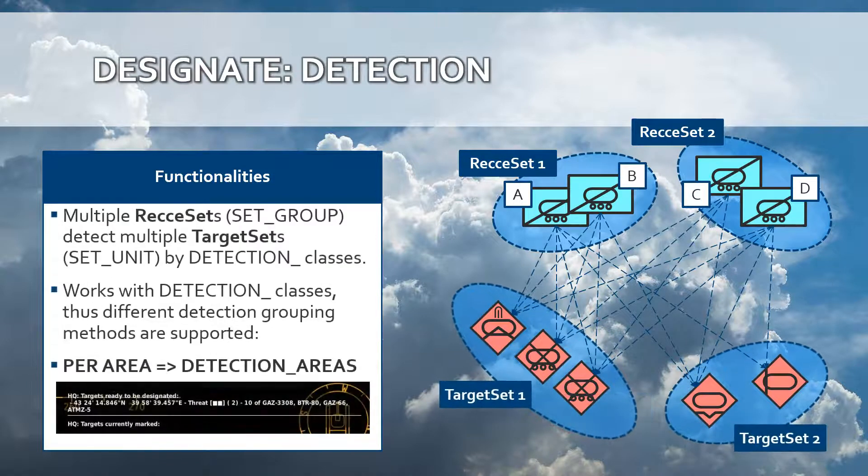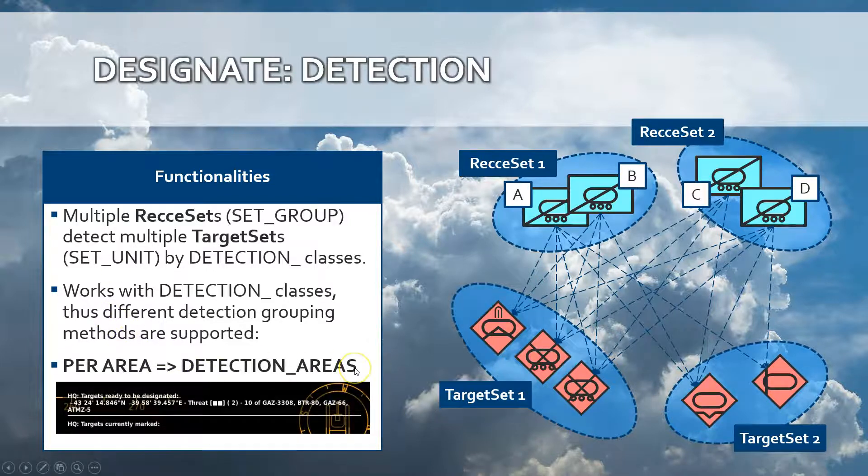The most advanced detection grouping mechanism is the DetectionAreas class. The DetectionAreas class will detect the targets based on an area, a range around the targets. In this example, two targets are being detected. Note the report shows the latitude-longitude, a threat level—in this case maximum of 2—and gives a bit more explanation of what unit types are within that area that has been detected.